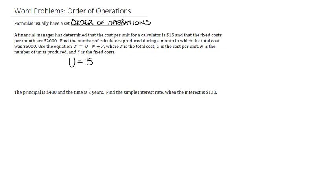It also says that the fixed costs, which is f, are 2,000. And finally, it says the total cost was 5,000. So the only thing that's actually missing here is n. And we can just substitute in everything else into that equation, which is t equals u times n plus f.